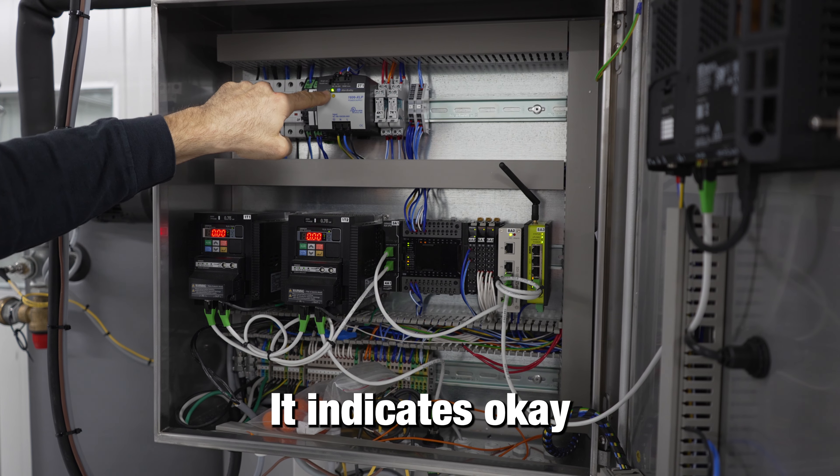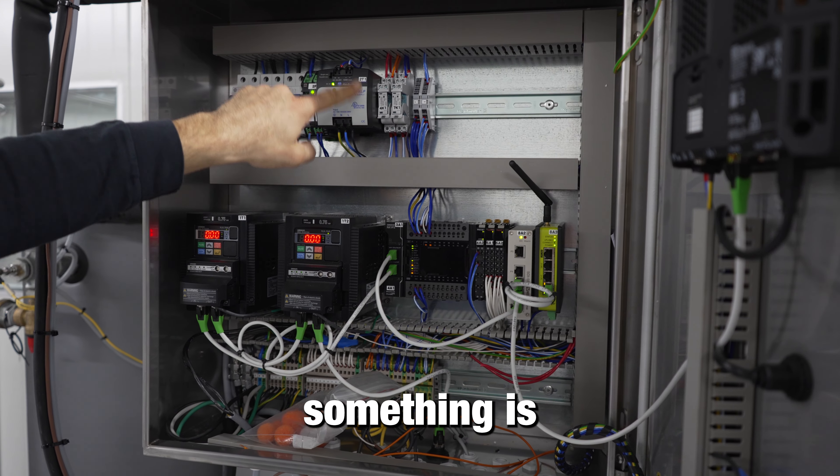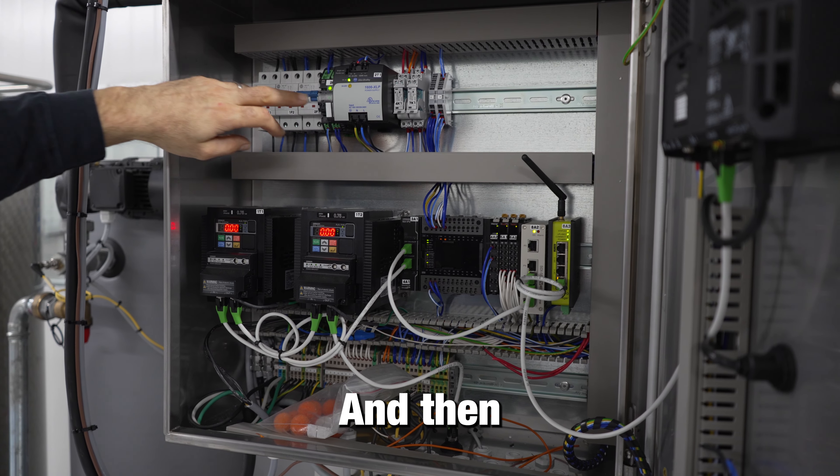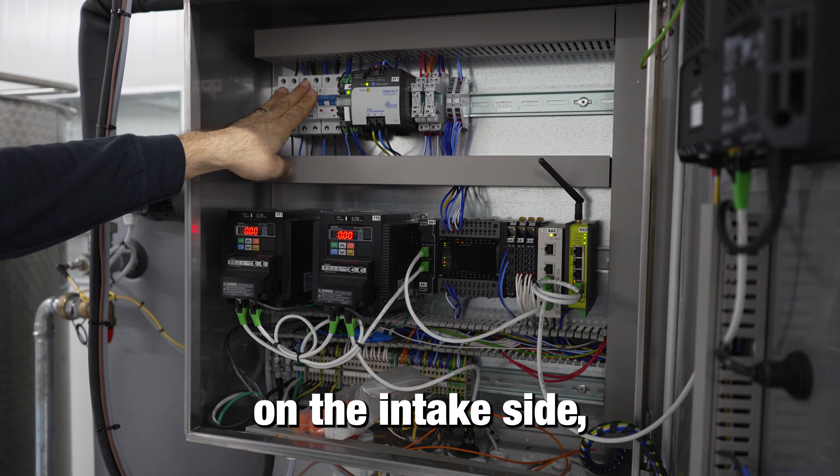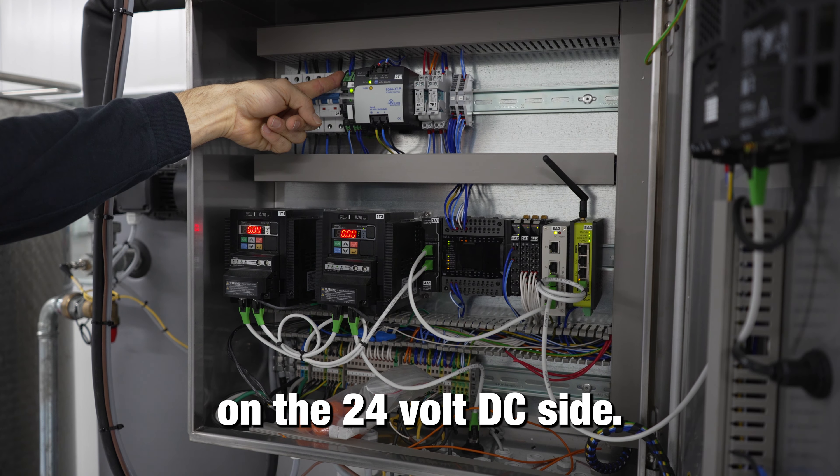All of that runs on 24 volts and that basically goes in at 220, comes out 24 volt DC. It indicates okay with the green light. If that light is not green, something is wrong with this, and we have a breaker on the 24 volt DC side.